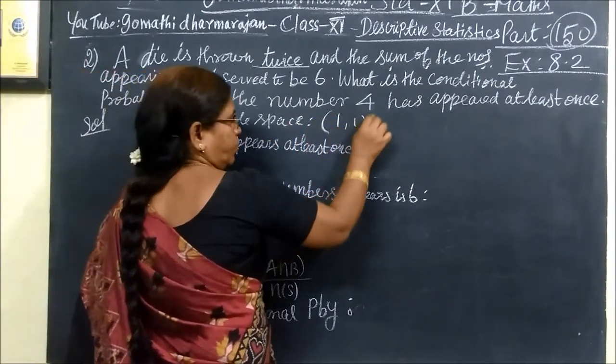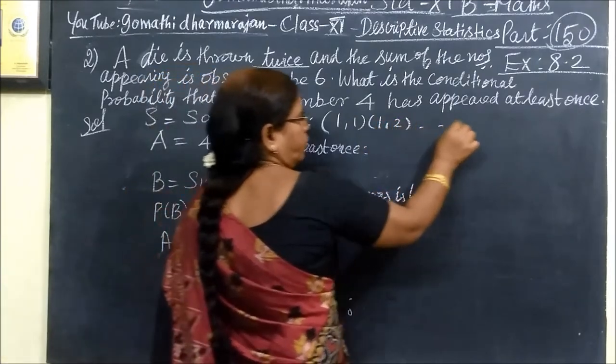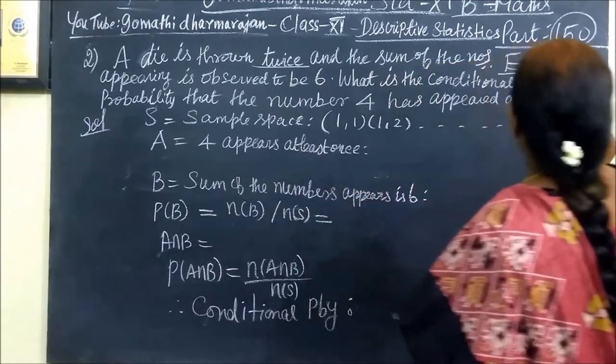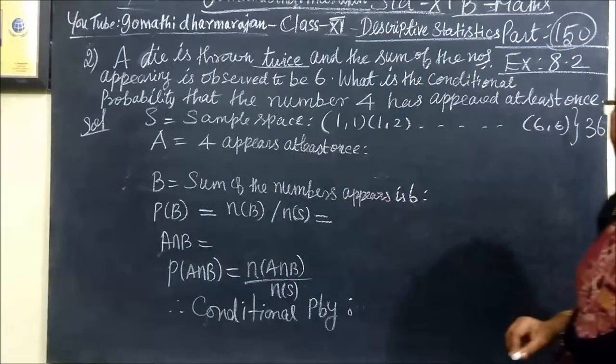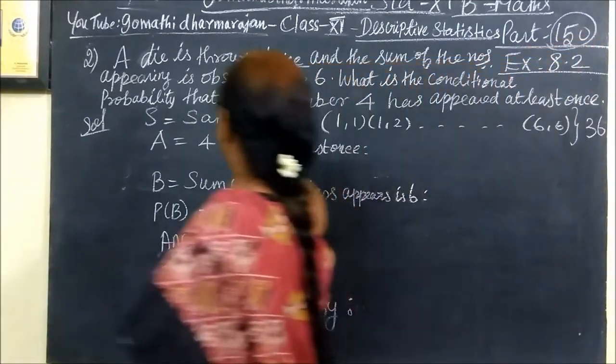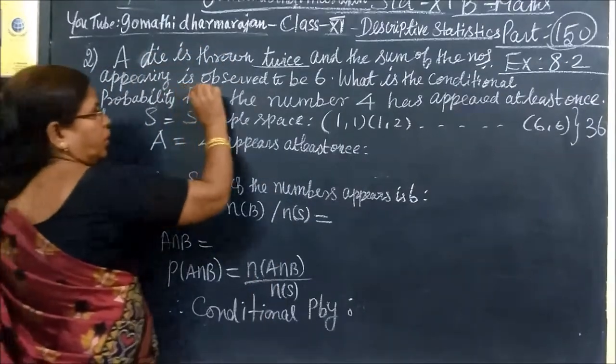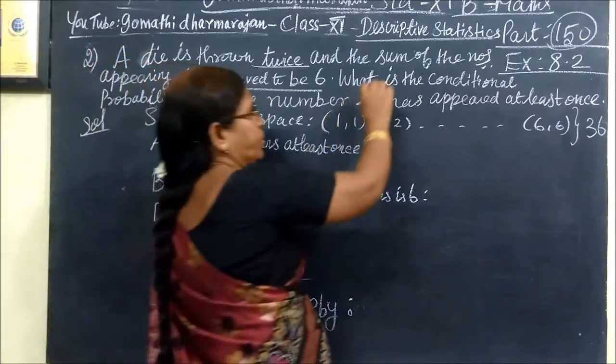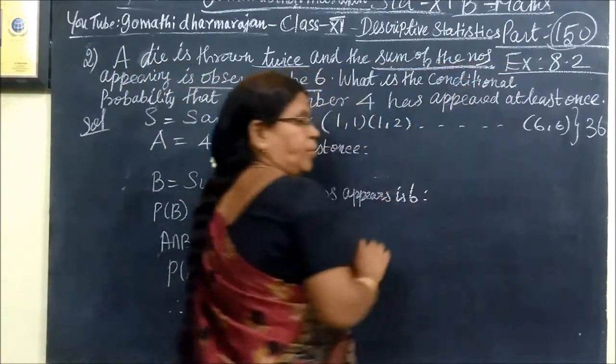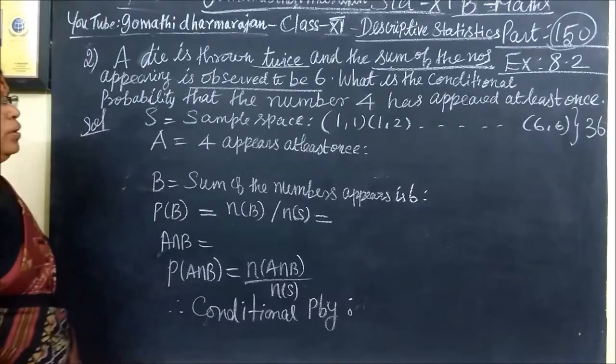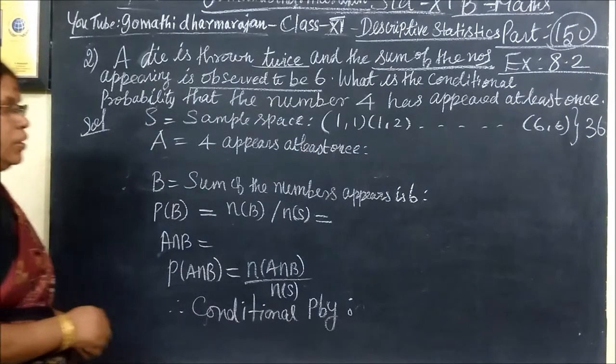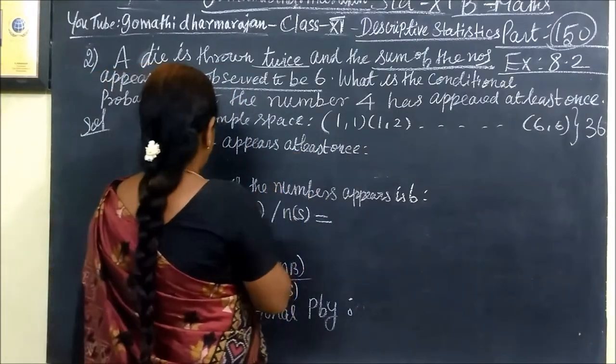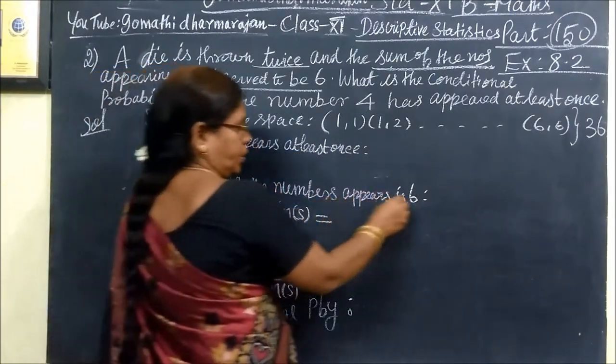Twice. What is the difference? 1,1, 1,2, etc. Last 6,6. Total 36. We have given the sum of the numbers. The sum of the numbers appearing is 6. In the 2 dice, 6 appeared once. The sum of the numbers appearing is 6.